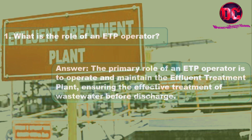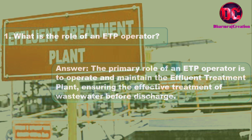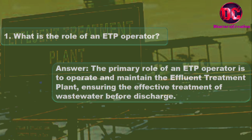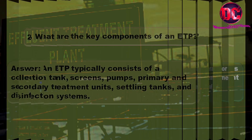1. What is the role of an ETP operator? Answer: The primary role of an ETP operator is to operate and maintain the effluent treatment plant, ensuring the effective treatment of wastewater before discharge.